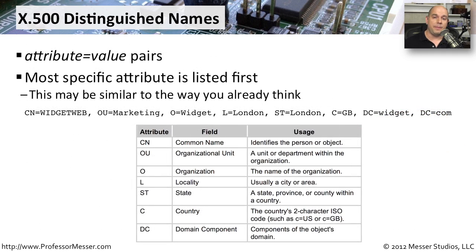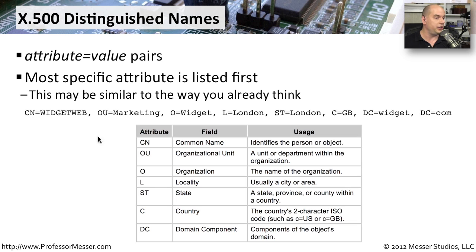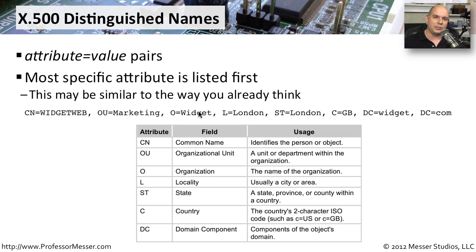LDAP uses an easy-to-read method of sending information: an attribute is equal to a particular value, and a number of those pairs are placed in an LDAP string, with the most specific attribute listed first. Attributes include things like common name, organizational unit, state, and country. For example, CN equals widget web means the common name of this device is widget web. The OU is marketing, the O or organization is widget, the locality is London, the state is London, the country is GB for Great Britain, and the domain components are widget and com. Just by looking at that LDAP string, you can get a very good idea of what the device is.